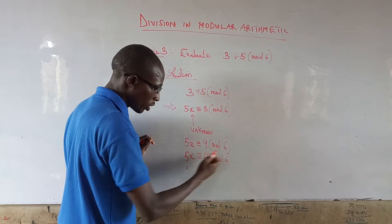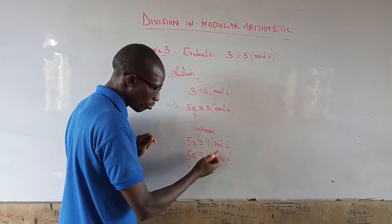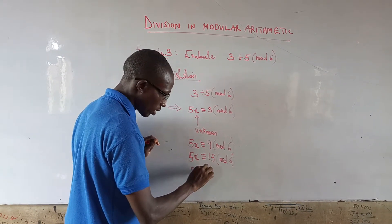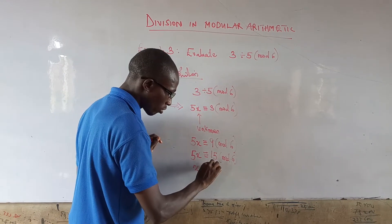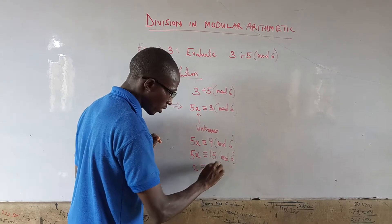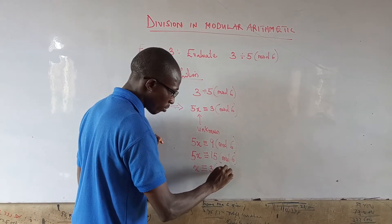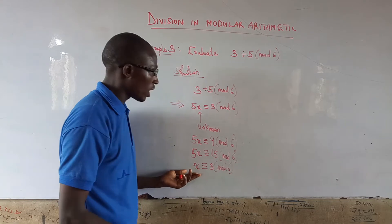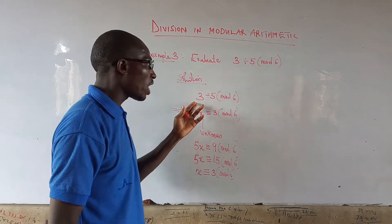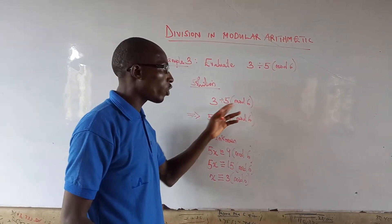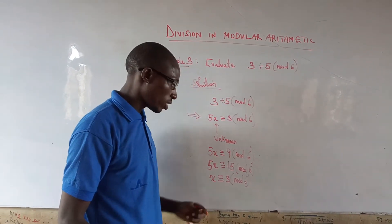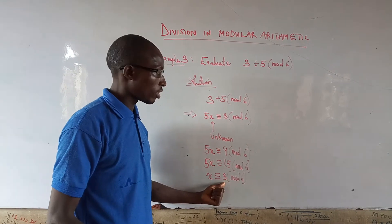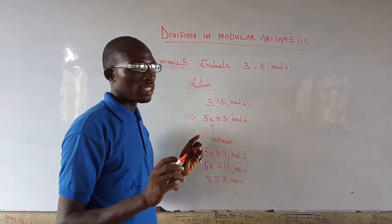At this point, we can divide 15 by 5. So x is congruent to 3, mod 6. This tells us that when dividing 3 by 5 under mod 6, the answer is 3.